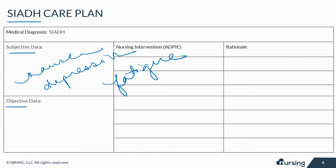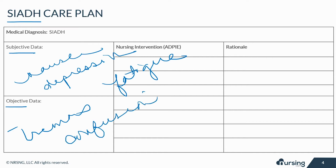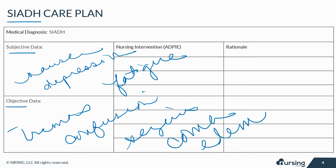Objective and measurable data might include vomiting, hypothermia, tremors, confusion, seizures, coma, edema, and signs of volume overload.